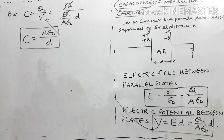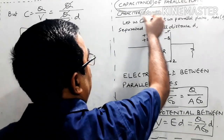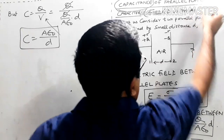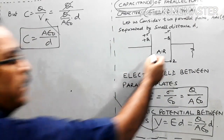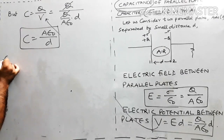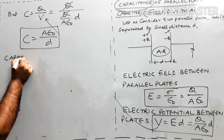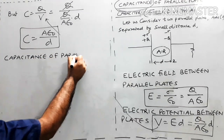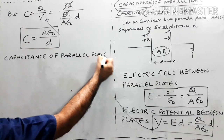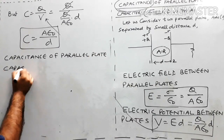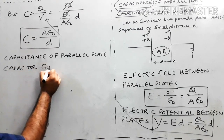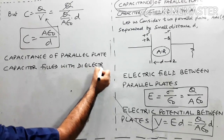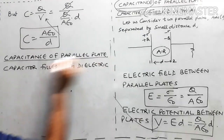So the capacitance of a parallel plate capacitor filled with air is C = Aε₀/D. Now let us consider the capacitance of a parallel plate capacitor filled with a dielectric.